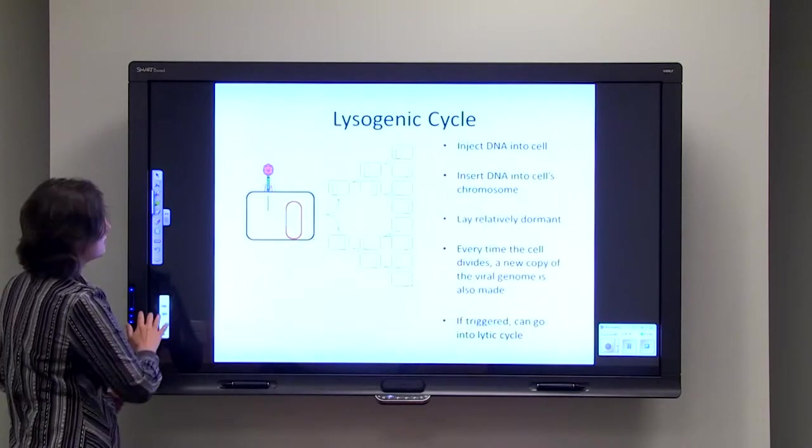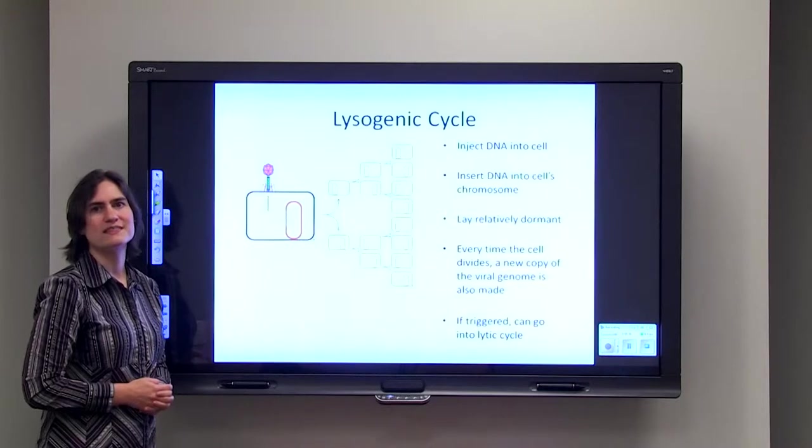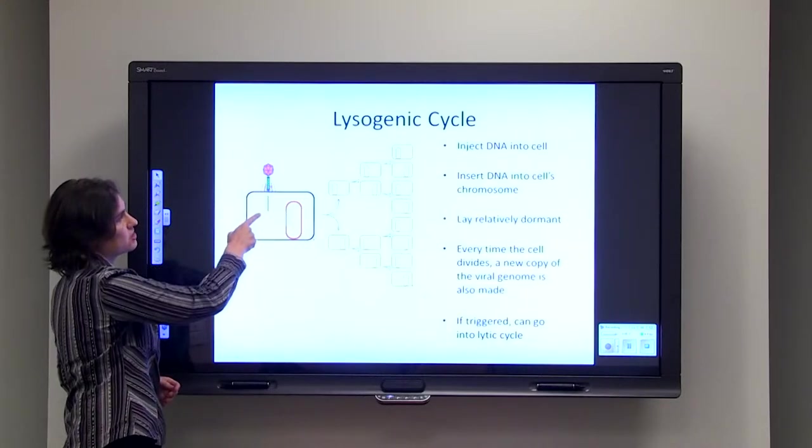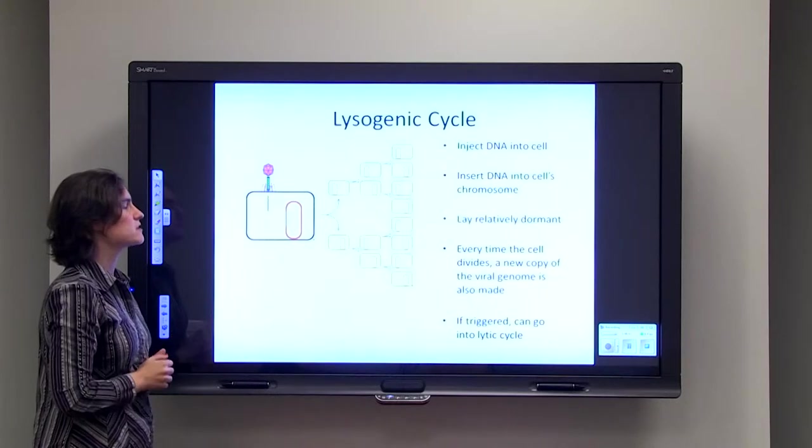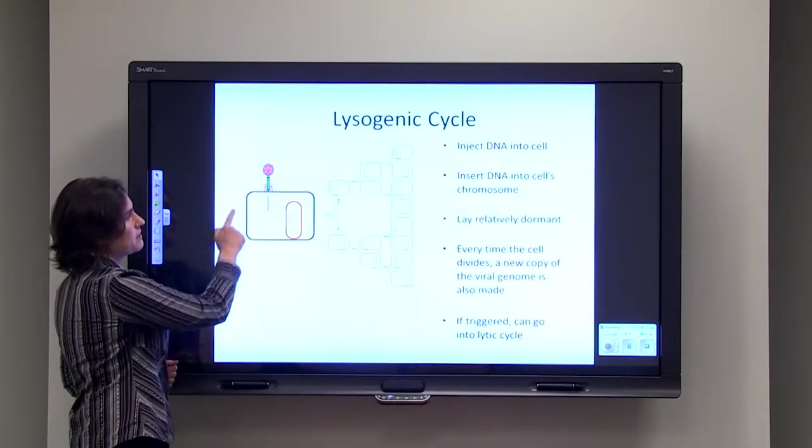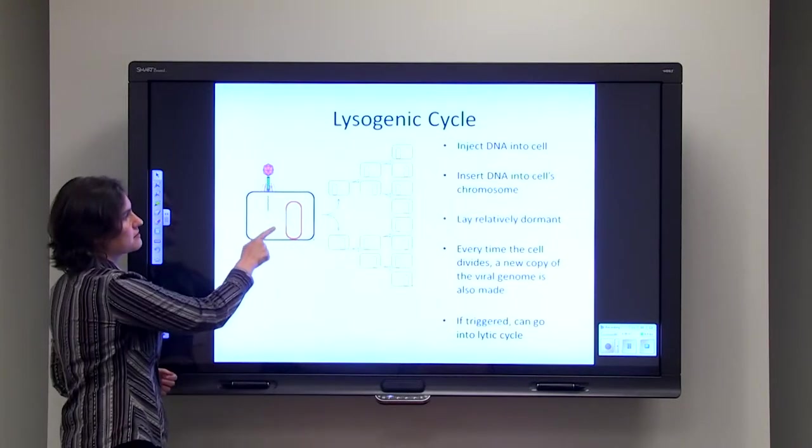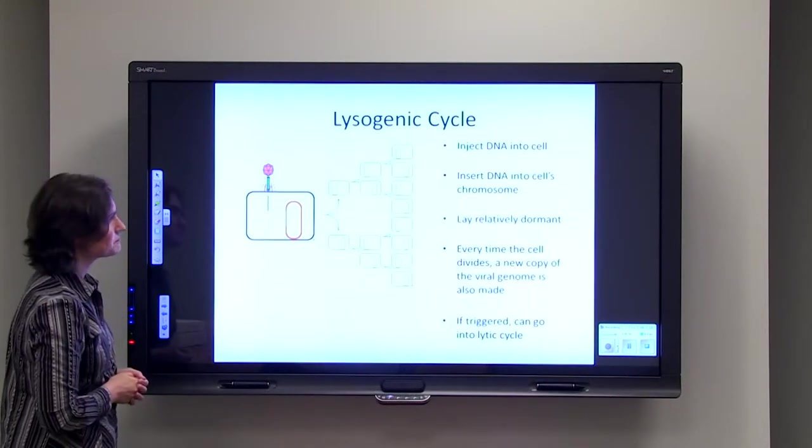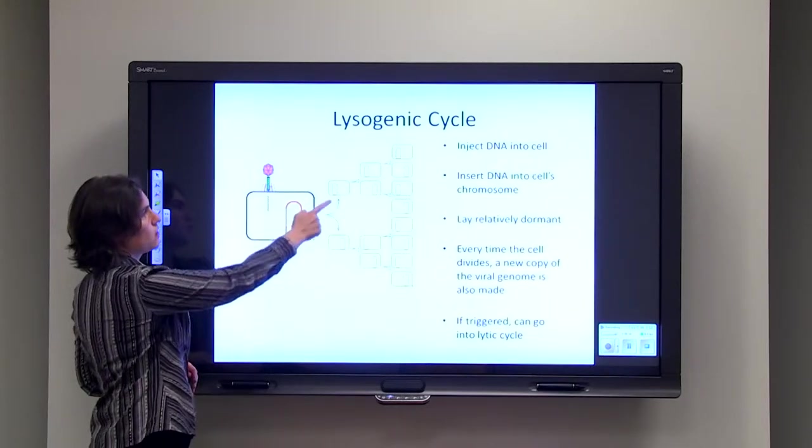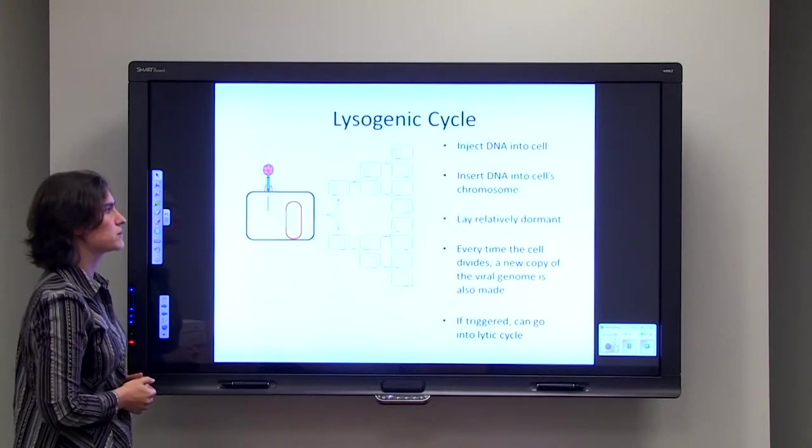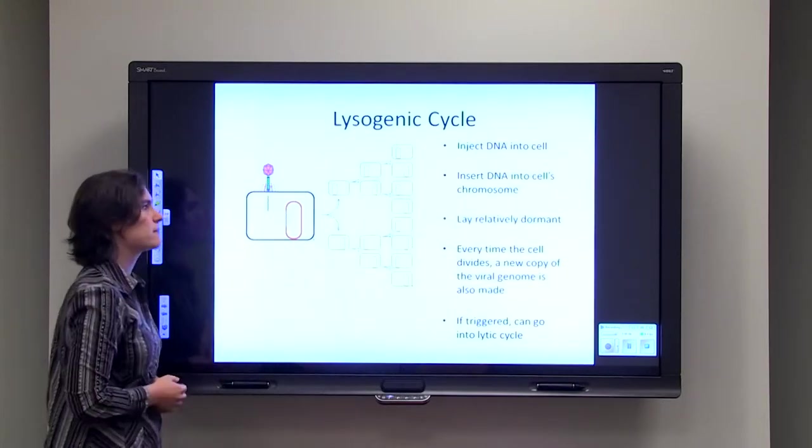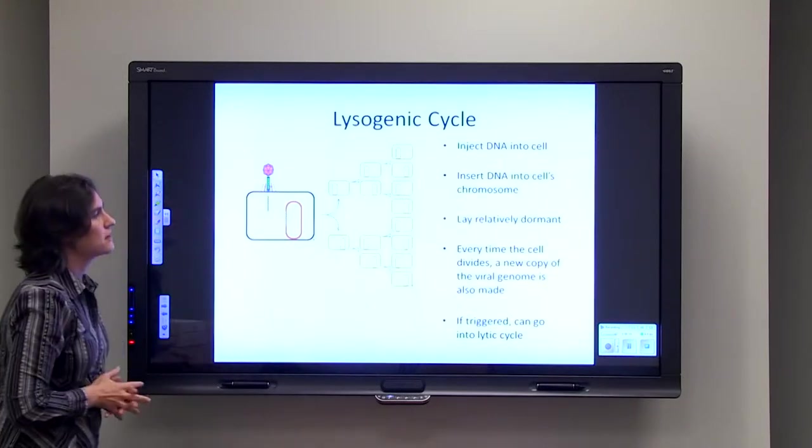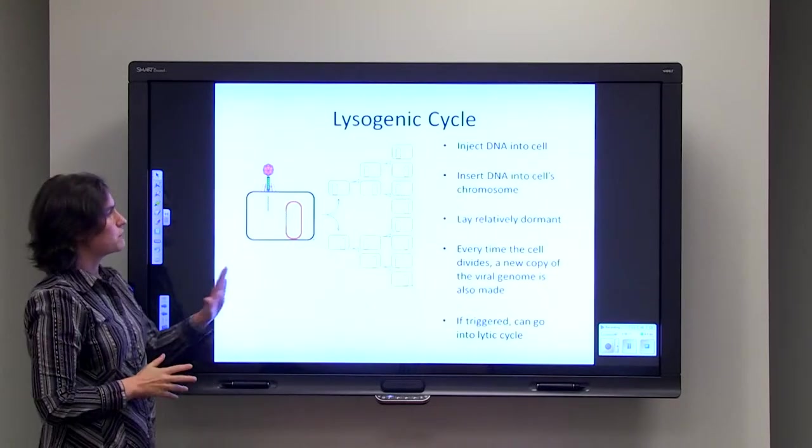Now some viruses can go through a different cycle called the lysogenic cycle. Again, we've got our virus that injects its genome into the cell, but then the next part is different. Instead of making many copies of itself and bursting forth from the cell, instead it inserts itself directly into the chromosome of the bacteria. Then whenever the cell divides, we not only copy the bacterial chromosome, we also copy the viral chromosome. When those cells divide again, they not only copy the chromosomal genome, they also copy the viral genome, and we can end up with a lot of cells that have virus present in them.